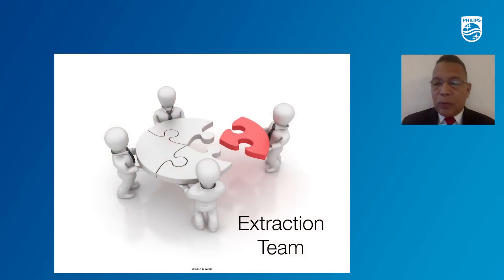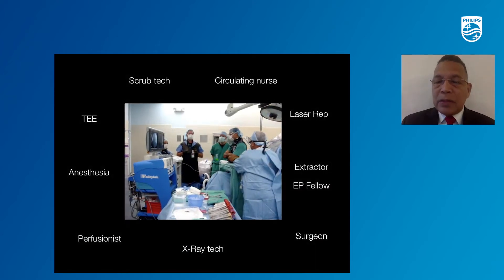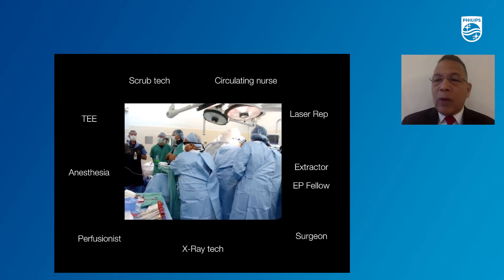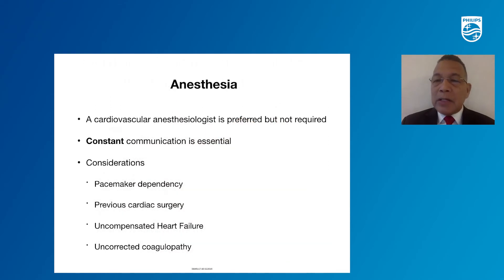It's very important to have a great, competent team: surgeons, perfusionists, scrub techs, nurses, and one often-forgotten member — anesthesia. Make sure the team knows exactly what to do. At times we do mock codes or serial drills to ensure the team has everything they need to handle the complication. Anesthesia should be part of the extraction and should be communicated on the steps of the extraction as well.